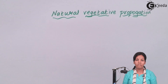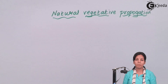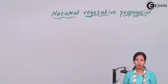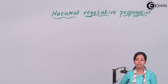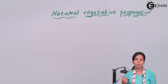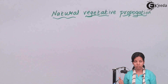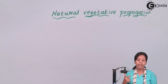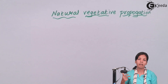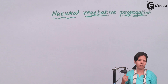Vegetative propagation means using a part of the plant to grow a new one. Today we'll be studying three ways of natural vegetative propagation: it can be done with the help of roots, with the help of stem, and with the help of leaves or bryophyllum.